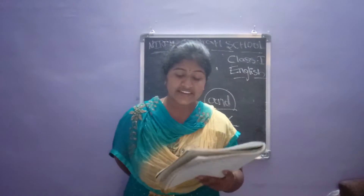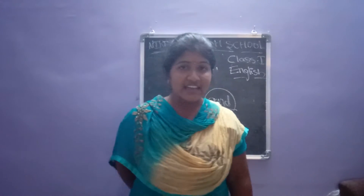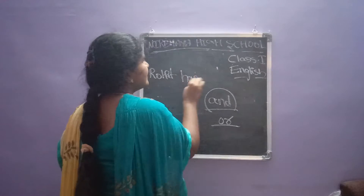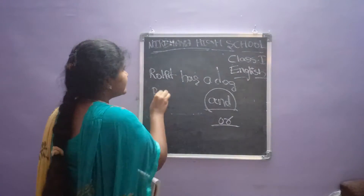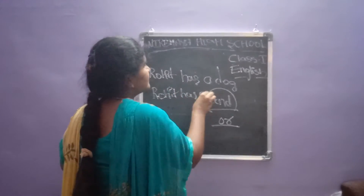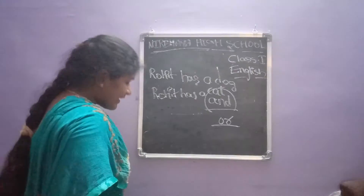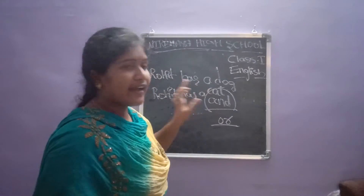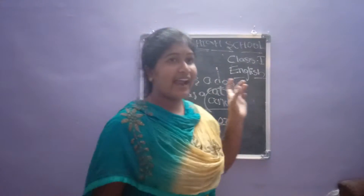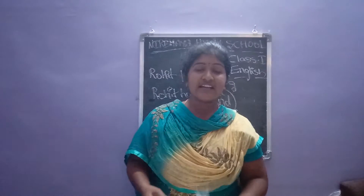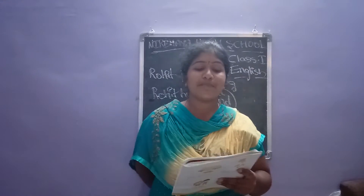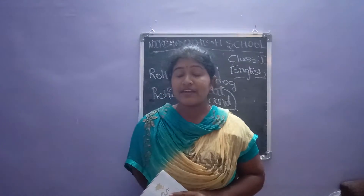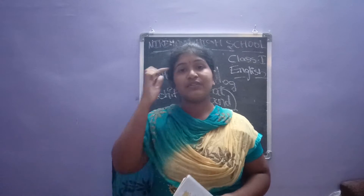We use 'and' to join words and sentences that are related to each other. For example: Rohit has a dog. Rohit has a cat. These are two sentences. How do I join them? Rohit has a dog and a cat — by using 'and'. Next: Chetan played well. Chetan won a prize. So: Chetan played well and he won a prize.